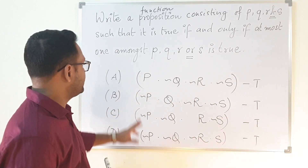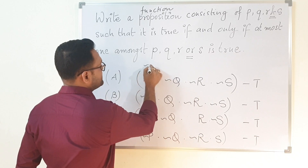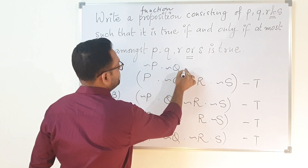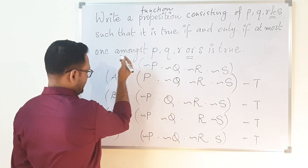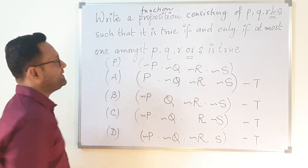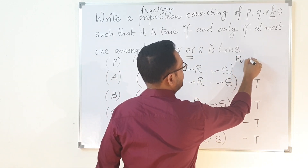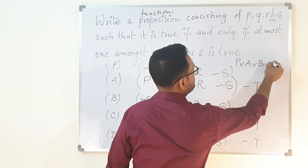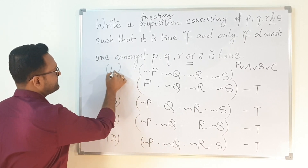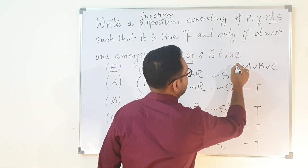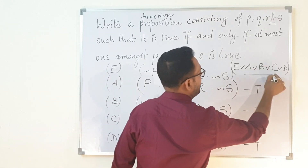As I mentioned initially, it is not only these four things. There will be one more case, and that will be if all of them are false. So that will be: negation of P ∧ negation of Q ∧ negation of R ∧ negation of S. This will also be a function — let me name it E. So the answer of this question will be E ∨ A ∨ B ∨ C ∨ D.